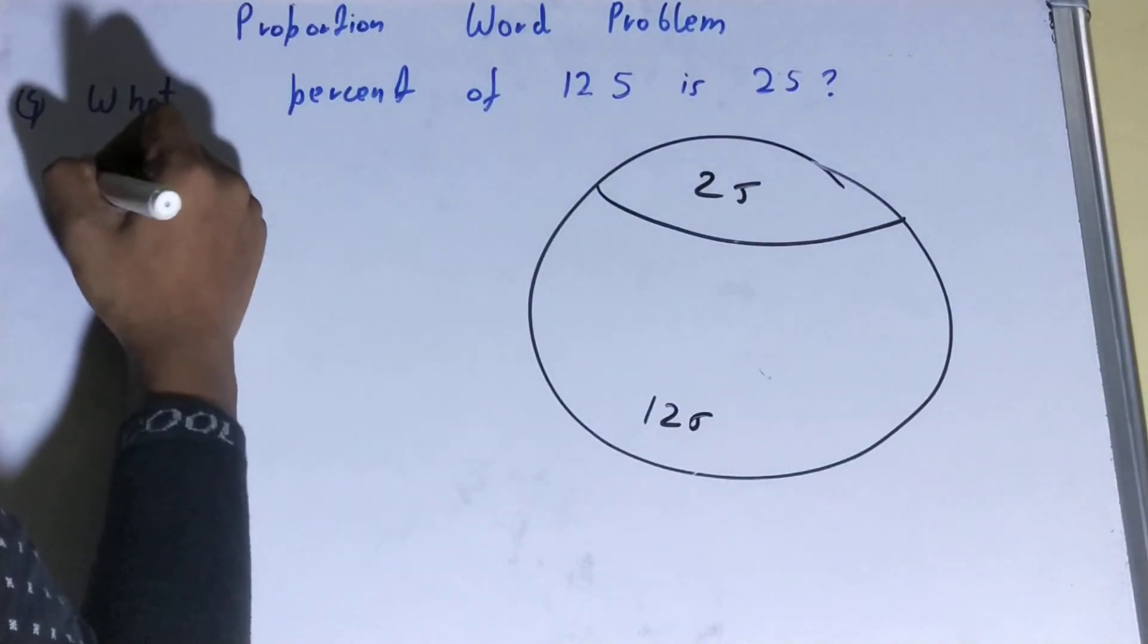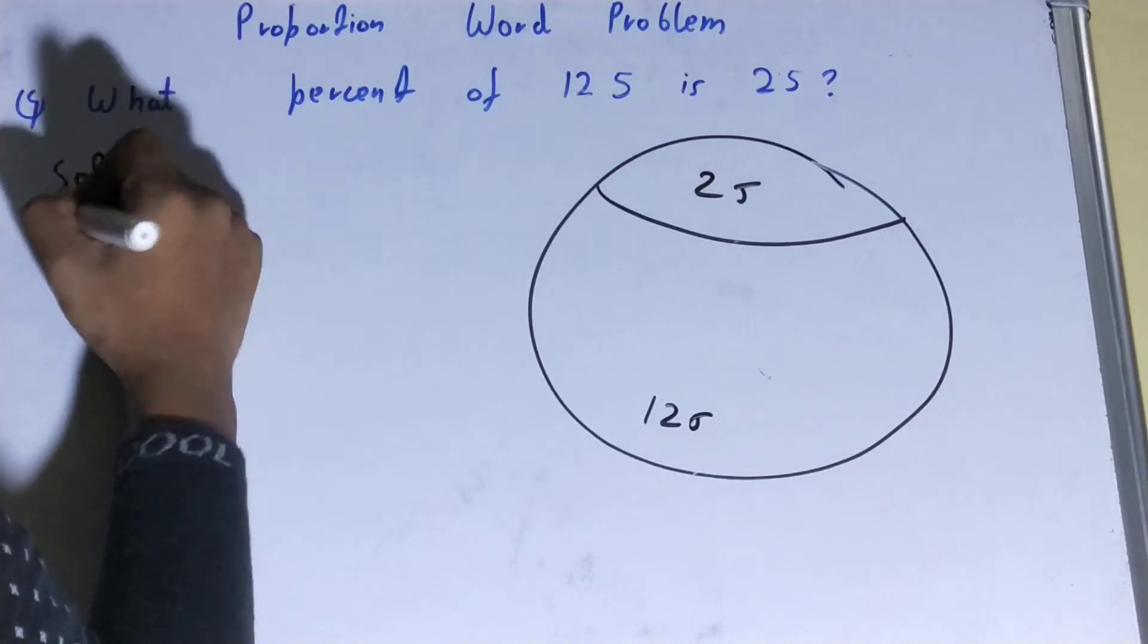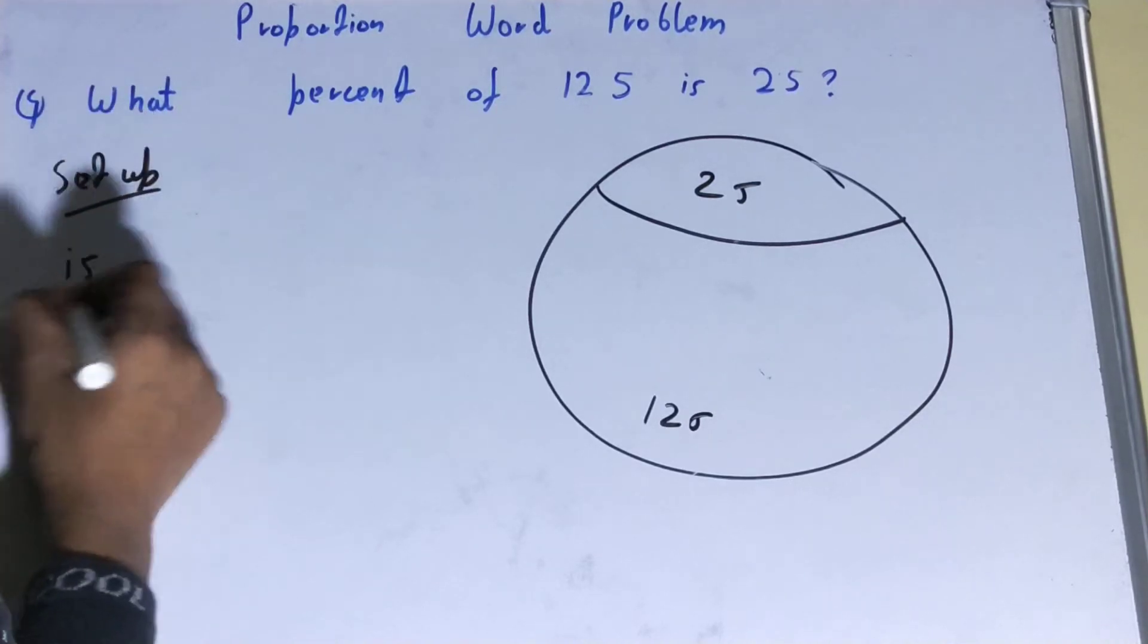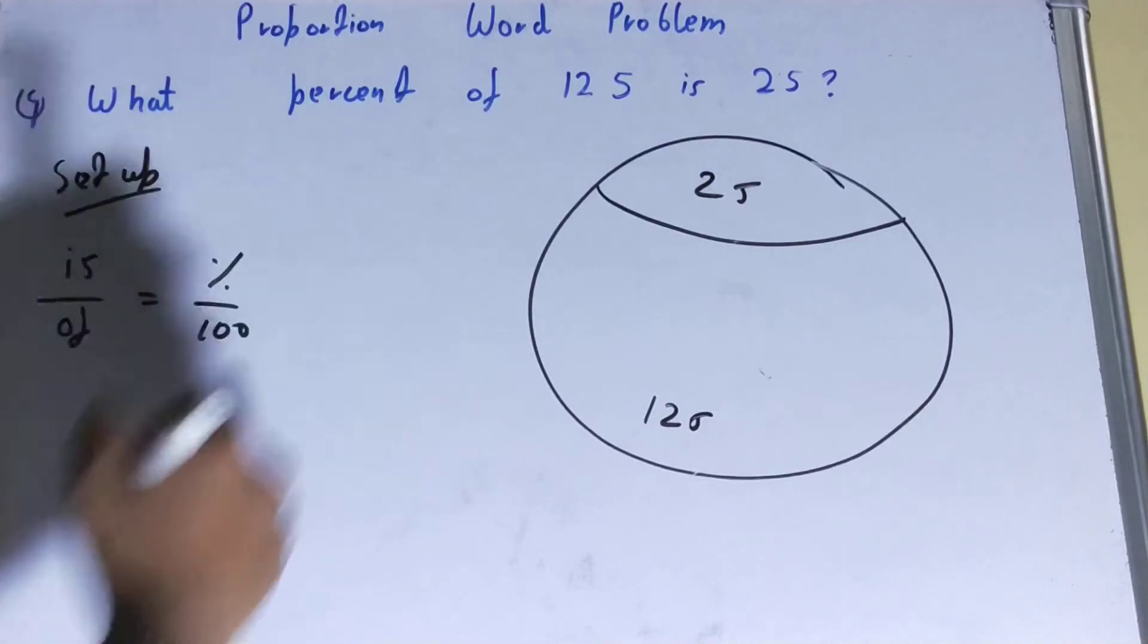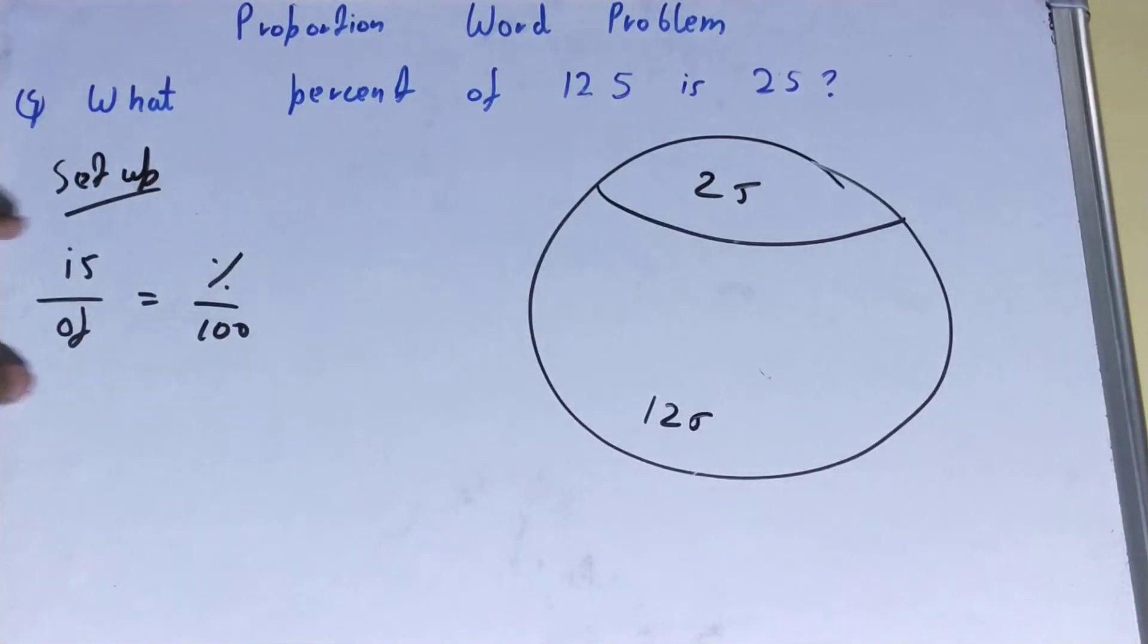You need to remember this setup: whenever you have a proportion question, it is 'is upon of' equals 'percent upon 100'. Any proportion question will come in this form, and you need to place the question into this form.